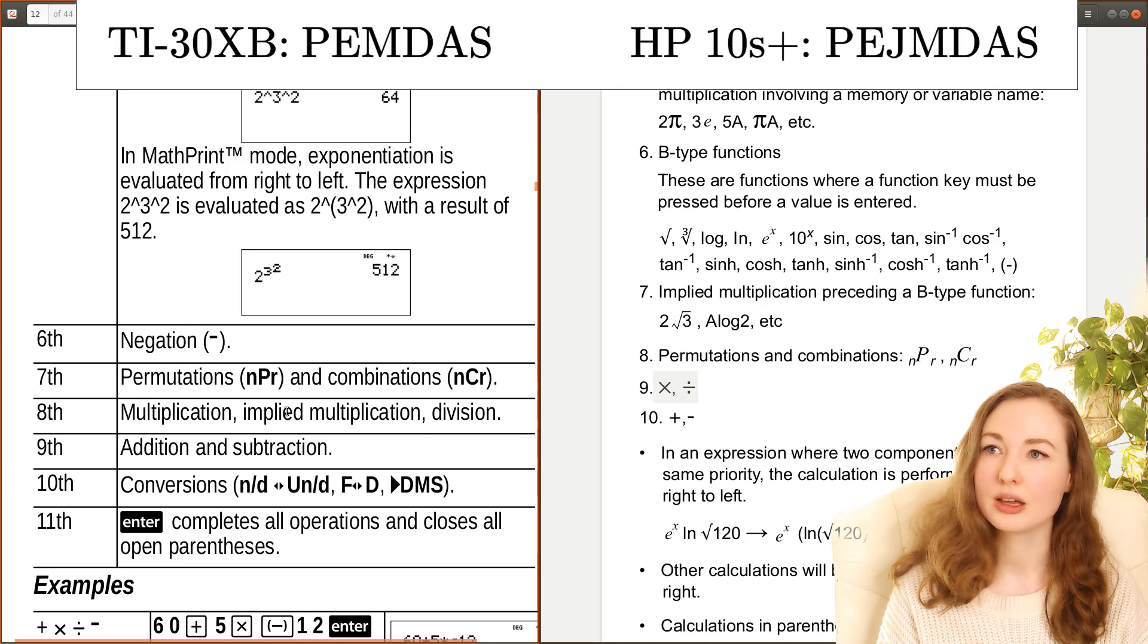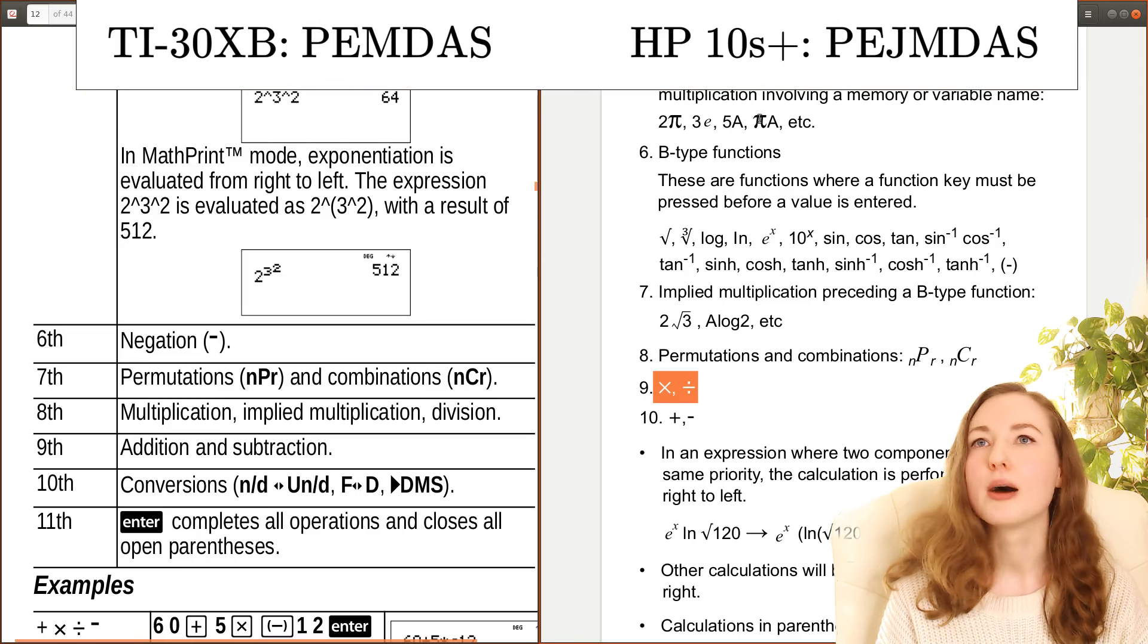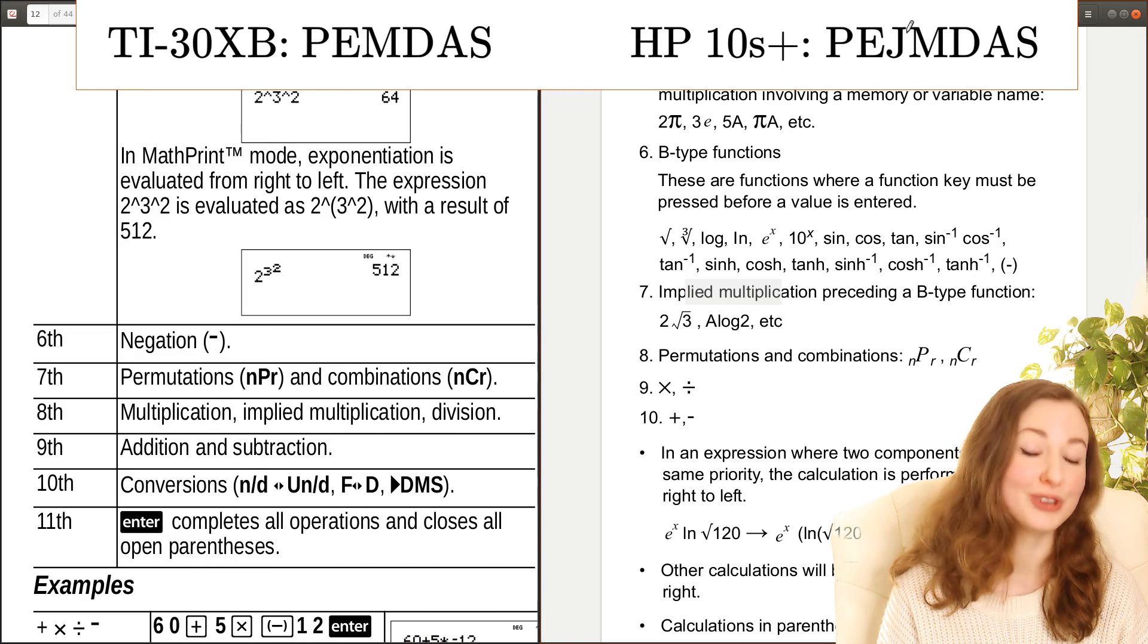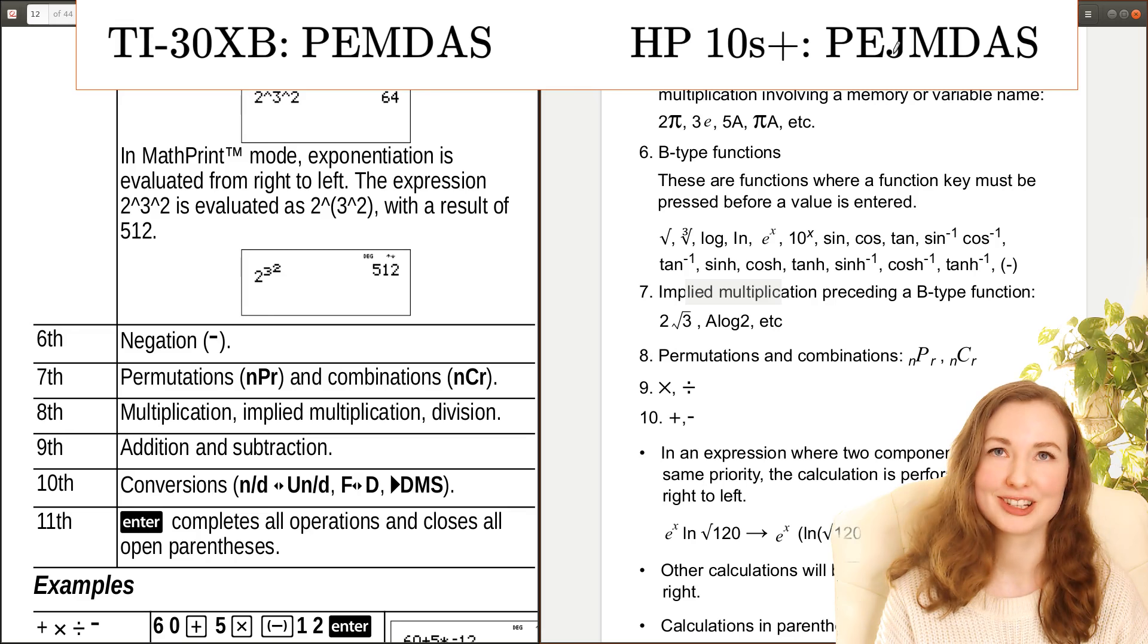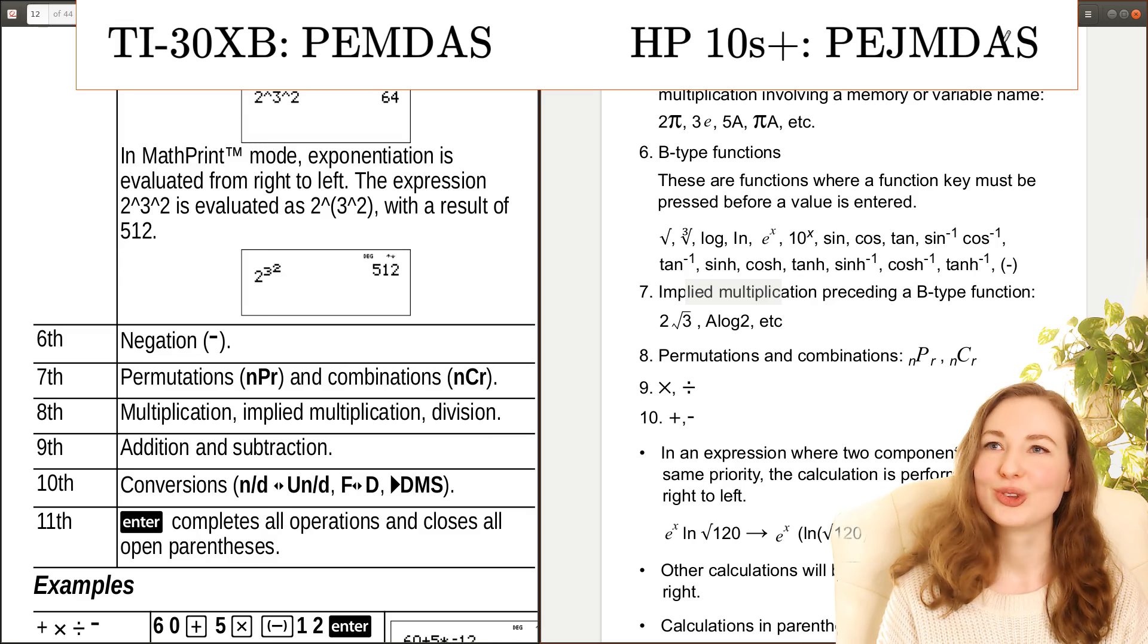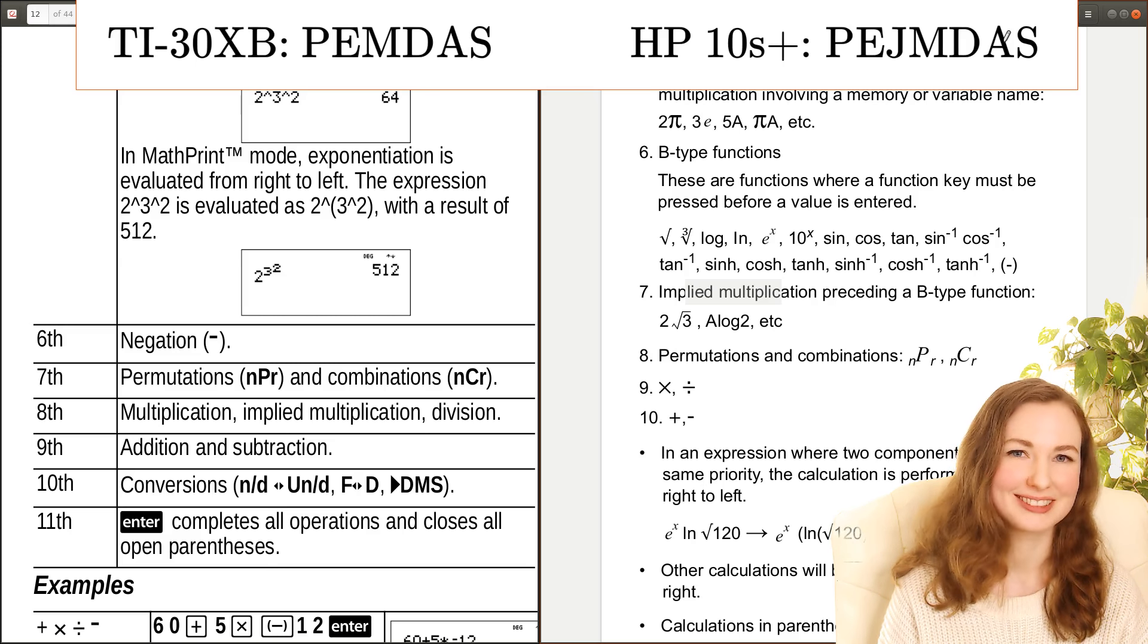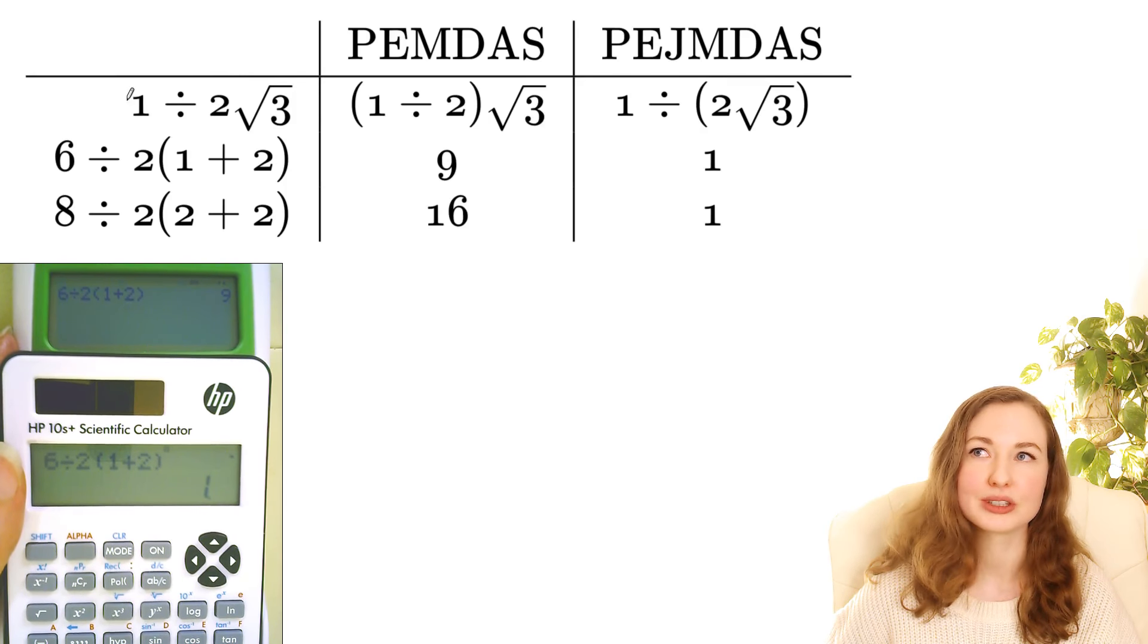So this method where implied multiplication has the same priority as division I'm going to be calling that PEMDAS. And this one where there's this extra level I'm going to be calling that PEJMDAS. So parentheses, exponents, multiplication by juxtaposition, and then multiplication and division. So explicit multiplication with the times symbol still has the same level as division. And then there's addition and subtraction. So those are the two main methods that calculators use, either PEMDAS or PEJMDAS. So this disagreement between PEMDAS and PEJMDAS is what causes the two calculators to interpret this differently.